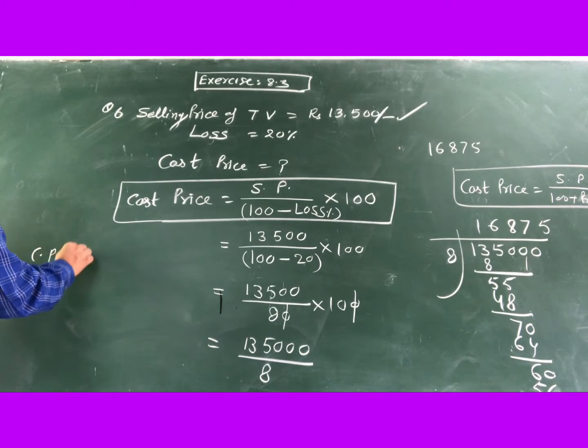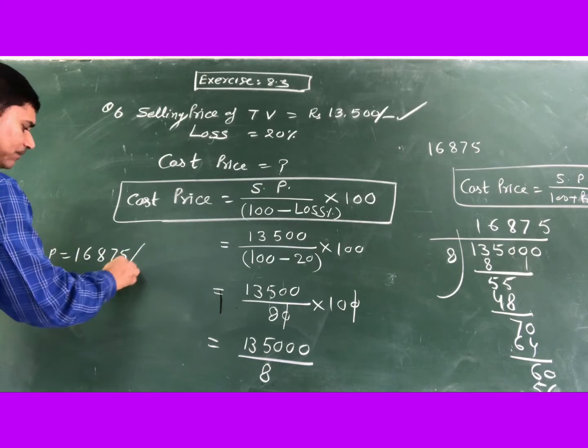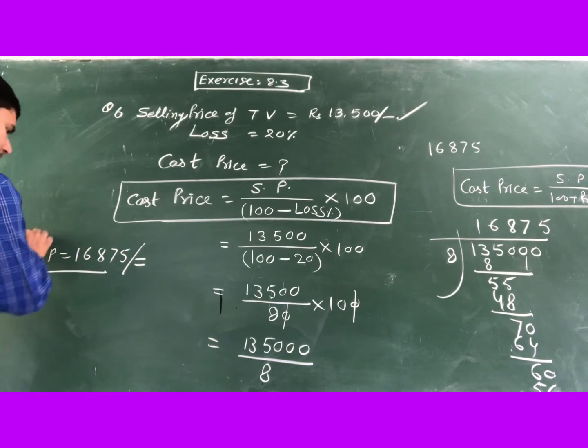So the cost price of this television is 16,875. CP equals 16,875. This is the answer of this question.